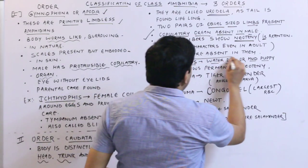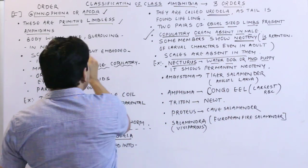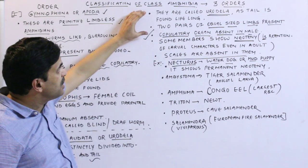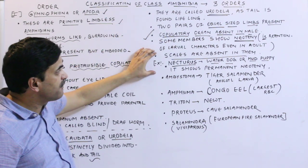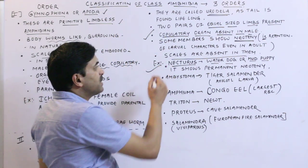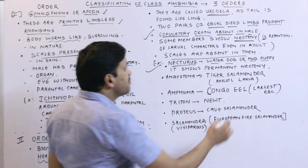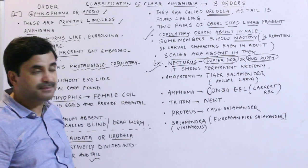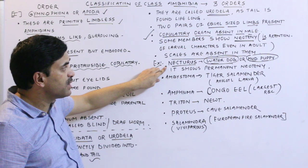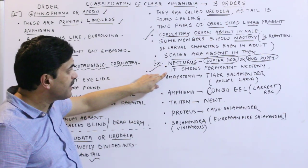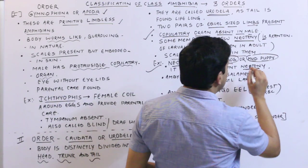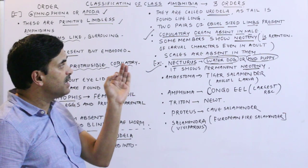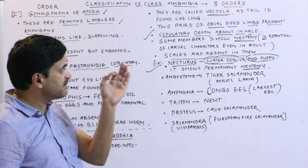Neoteny is the retention of larval characters even in the adult, where the larva begins reproduction. Scales are absent in Urodela, unlike in Apoda where they were present. An important member of Order Urodela is Necturus, also called water dog or mud puppy. It shows permanent neoteny, meaning the larvae retain larval characters even in the adult stage.